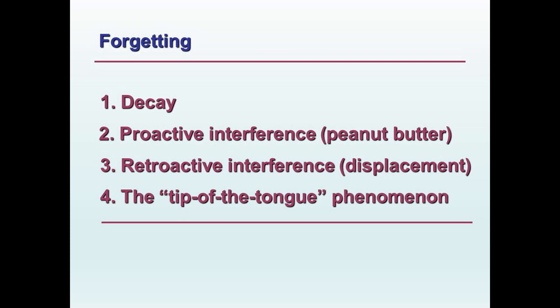Contrast that with retroactive interference. This is where you study information for one test, then study information for a second test, and now that you've studied for the second test, you can't remember anything you studied for the first. Something that occurs afterwards affects your memory of what occurred earlier.